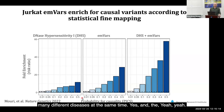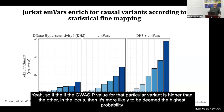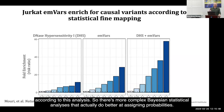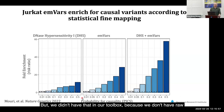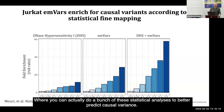If the GWAS p-value for a particular variant is higher than the other variants in the locus, it's more likely to be deemed highest probability according to this analysis. There are more complex Bayesian statistical analyses that actually do better at assigning probabilities. But we didn't have that in our toolbox because we don't have raw genotypes for most of these GWASs — a lot of GWAS data is behind access restrictions, so you can't do a bunch of these statistical analyses to better predict causal variants.